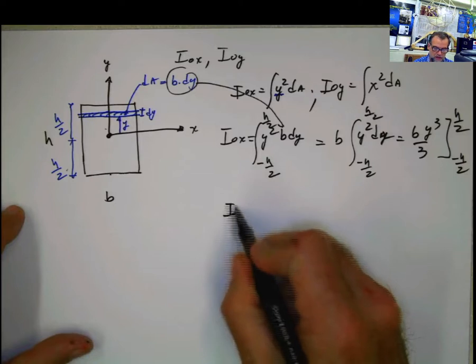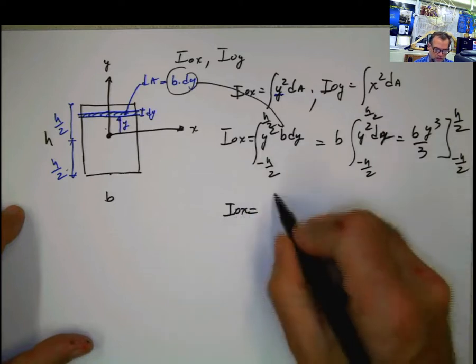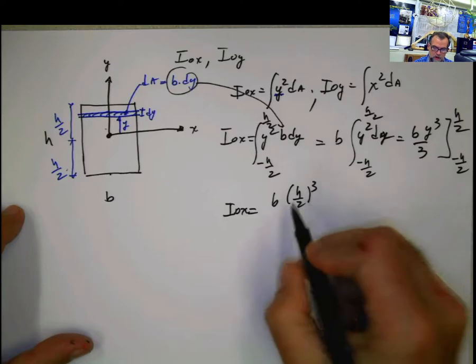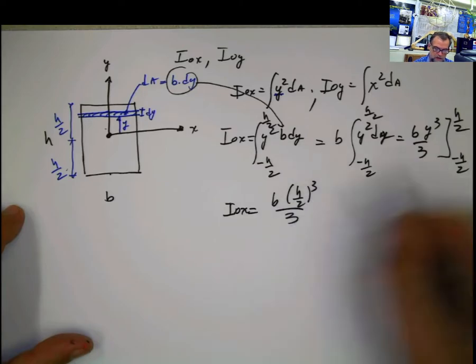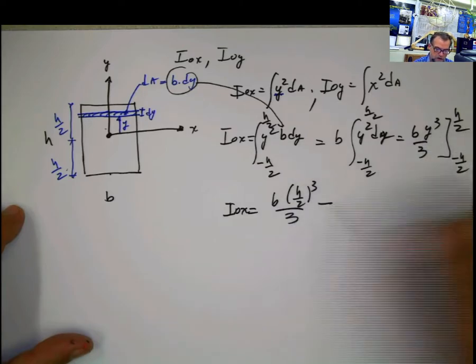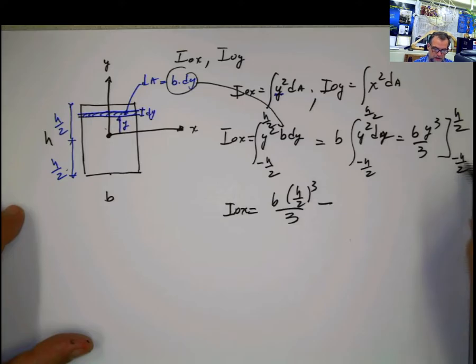And now we are going to substitute these limits here. So Ix is going to be equal to b times h divided by 2 to the third divided by 3. Remember, this is this y. Minus,